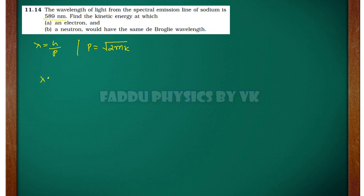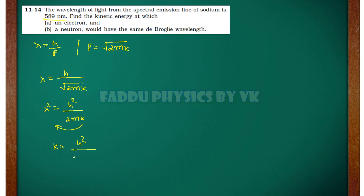You can see here, lambda is equal to H upon under root of 2mK. Taking squares on both sides: lambda squared is equal to H squared divided by 2mK. So, solving for K: K equals H squared upon 2m times lambda squared.